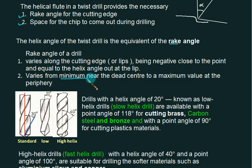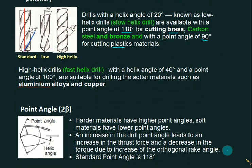The rake angle varies from minimum near the dead center to maximum value at the periphery. When the helix angle is high, the number of flutes is more; when the helix angle is lower, the number of flutes is less. Drills with a helix angle of 20 degrees, known as low helix, are available with a point angle of 118 degrees for cutting brass, carbon steel, and bronze, and with a point angle of 90 degrees for plastics. High helix or fast helix drills with a helix angle of 40 degrees and a point angle of 100 degrees are suitable for softer materials like aluminum alloy and copper.